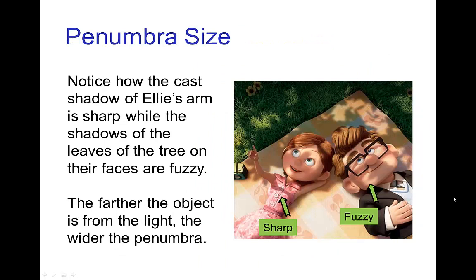And notice this effect of penumbra size is done nicely in this screenshot from Up. So we look at Ellie's arm. Her arm is close to her body, so she has a nice sharp shadow with relatively little penumbra, but the shadows of the leaves on the tree are much fuzzier because they're farther away.